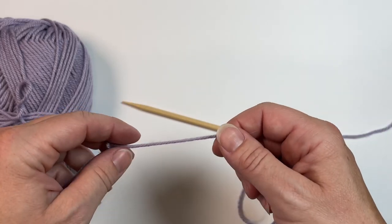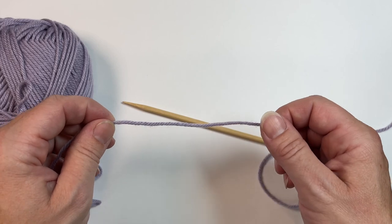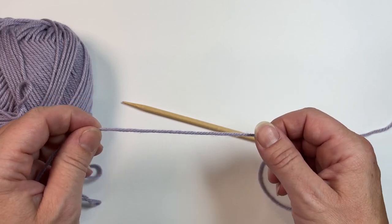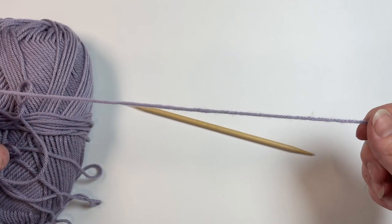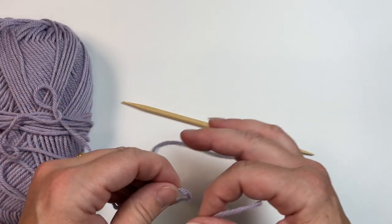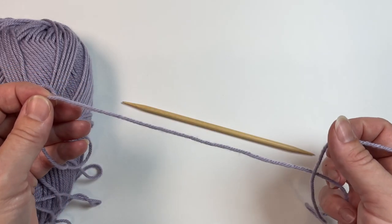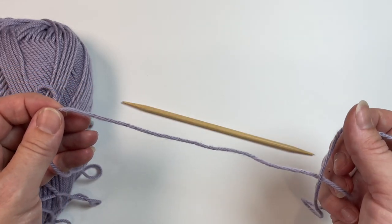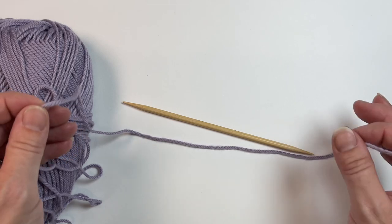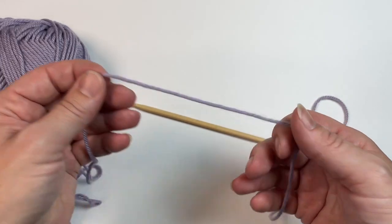If your scarf, let's say, is four inches wide, you need three times that length for your tail, so 12 inches, plus you need extra. When you're casting on a large number of stitches, the worst thing is running out of tail, so extra is always better.